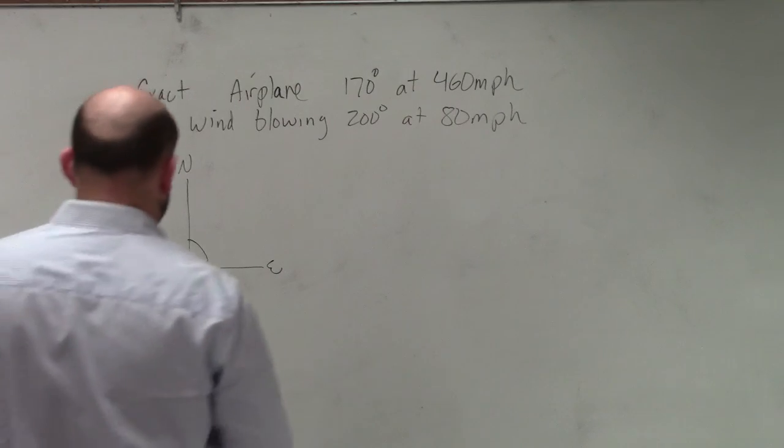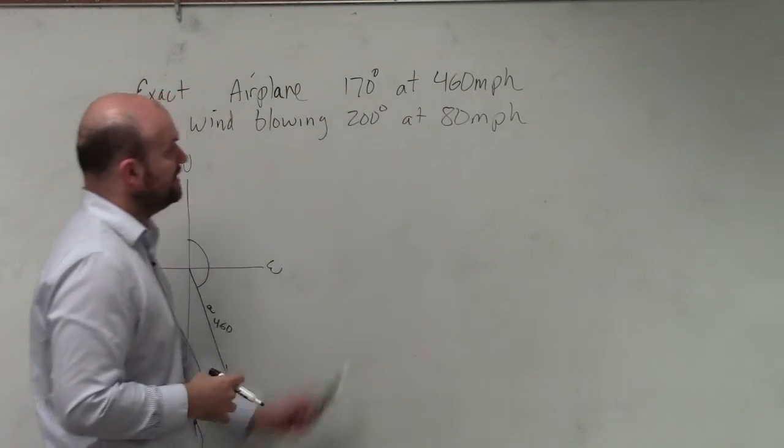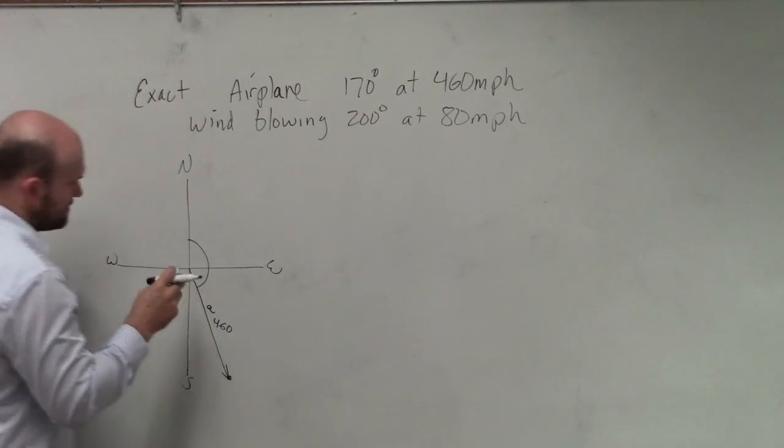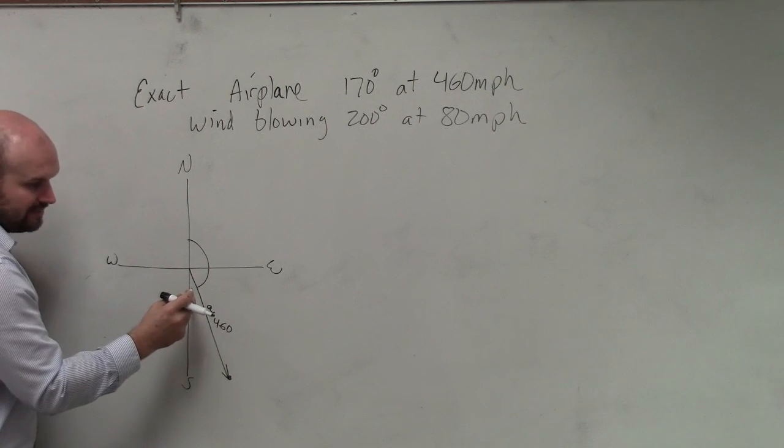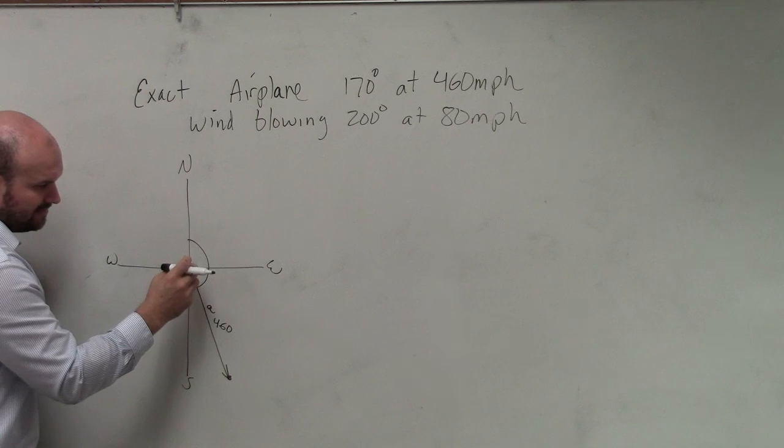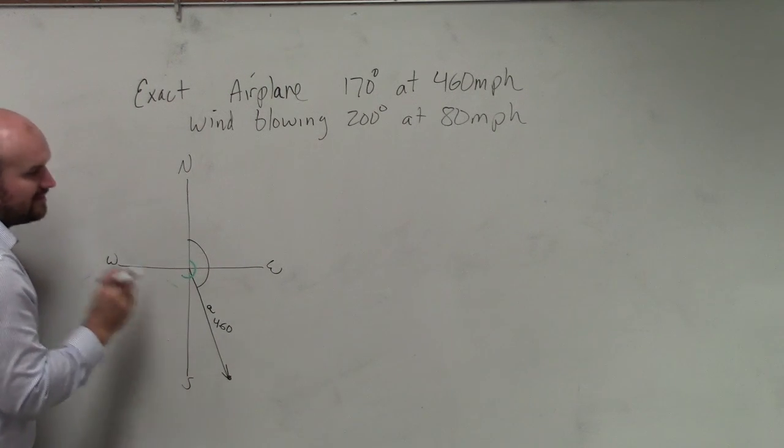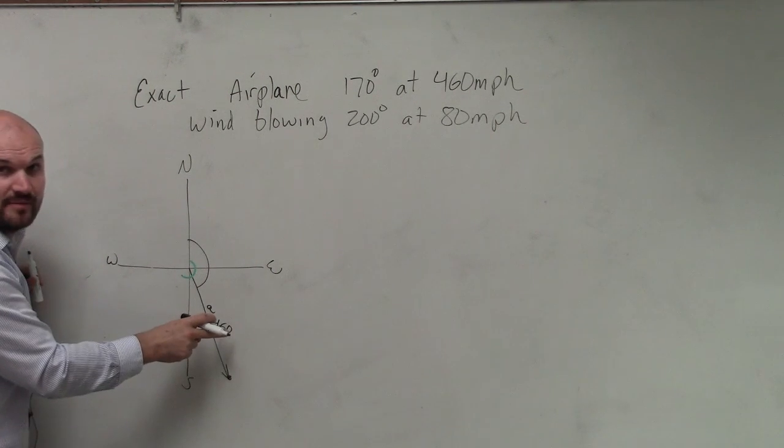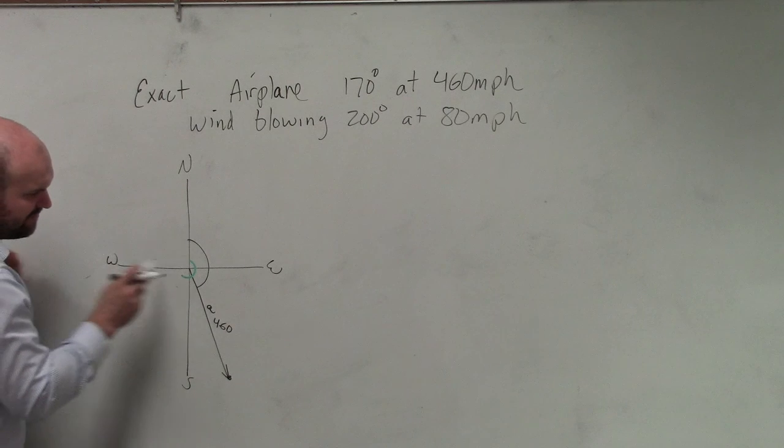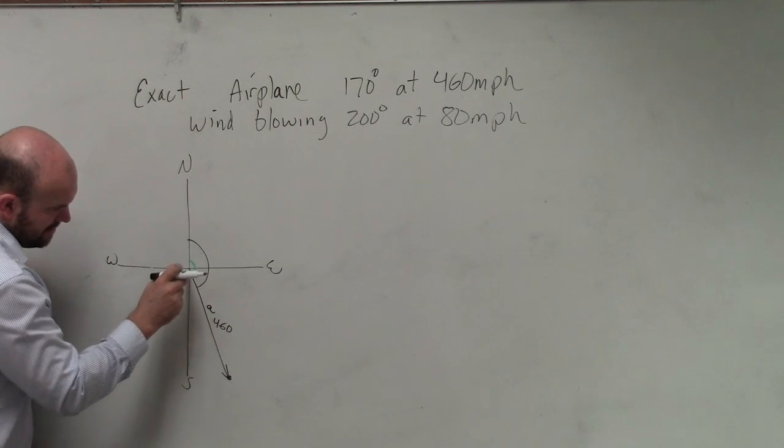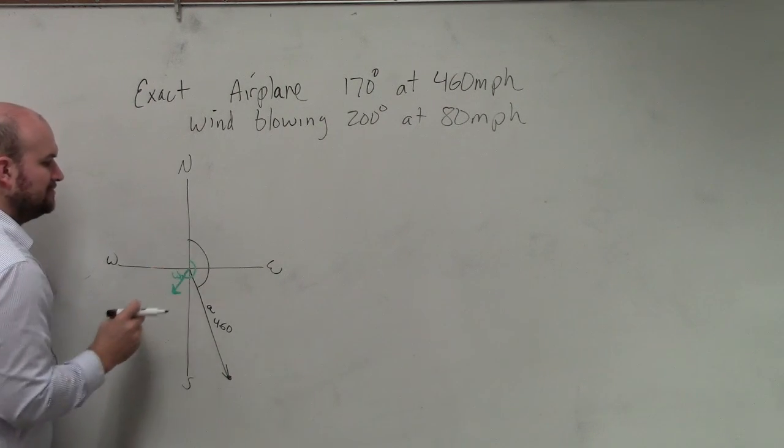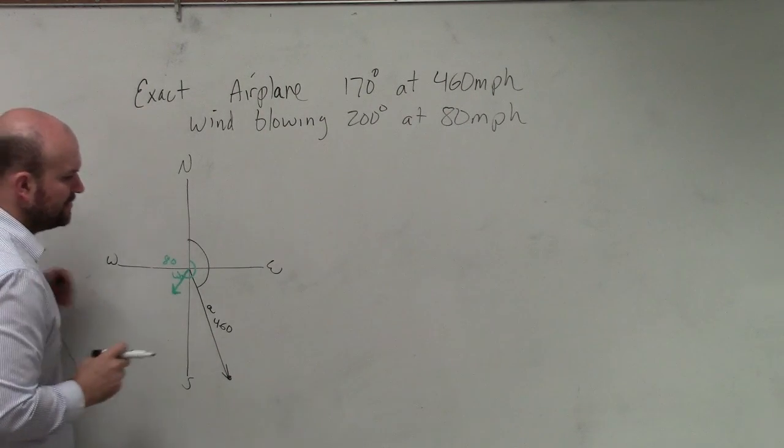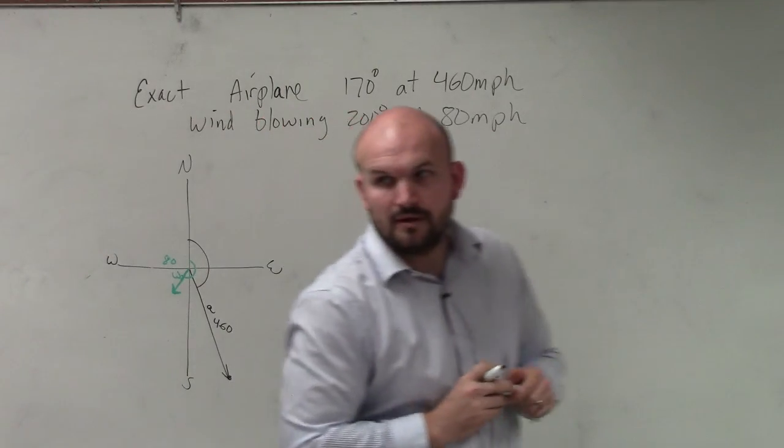Now, the next thing on this vector is we have our wind is blowing. And the wind is blowing at 200 degrees at 80 miles per hour. Well, again, if 180 is here, then 200 is going to be a little bit past that, right? But the magnitude is not as big as 460. Our magnitude is now only 80. So I'm not going to make a vector that's as big. And let's call that vector W with a magnitude of 80.